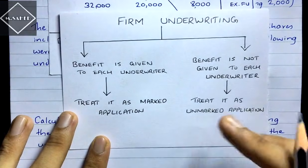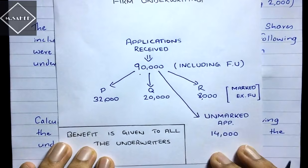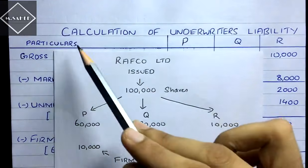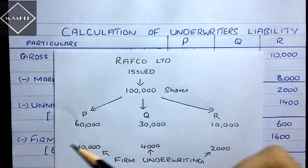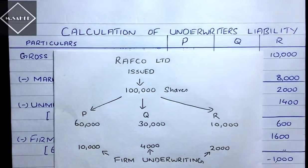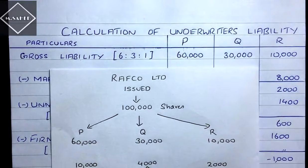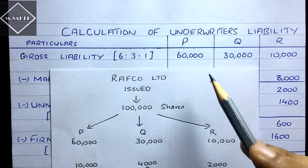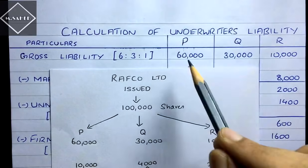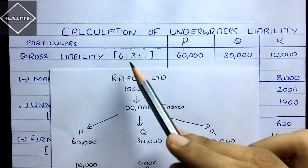Now let's solve this. Prepare the liability table with columns for P, Q, and R. First, take the gross liability — shares underwritten: P: 60,000, Q: 30,000, R: 10,000. The ratio of these figures is 6:3:1 — cancel out the zeros to get this. This gross liability ratio will be used to distribute unmarked applications and firm underwriting.